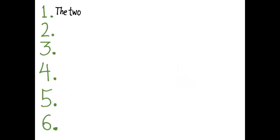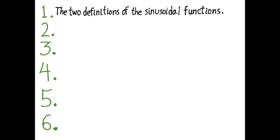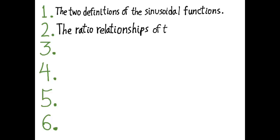Number one: the definitions of the sine function and the cosine function. There are two definitions — one uses triangle trigonometry, and the other uses the unit circle. Second, I need you to know the ratio relationships among the different trig functions. For example, sine over cosine equals tangent, and so on.